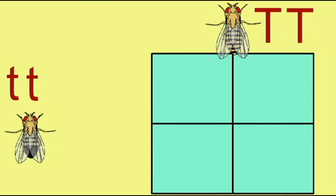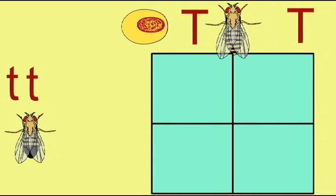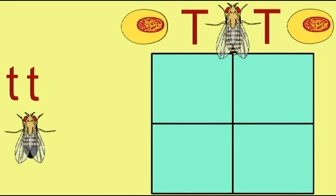A Punnett square can be made for fly crosses, just as they can for human genetic crosses.